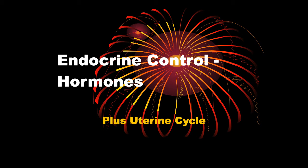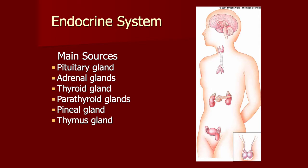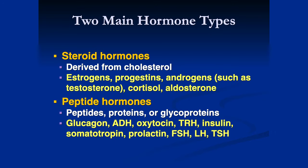The last system we're going to cover is the endocrine system. The main sources of the endocrine system are going to be the pituitary gland, the adrenal glands, the thyroid, the parathyroid, pineal, and thymus. We're going to talk about the different types of hormones that they secrete.